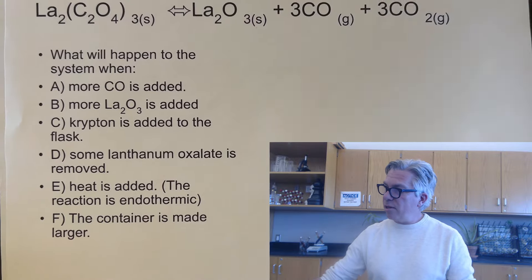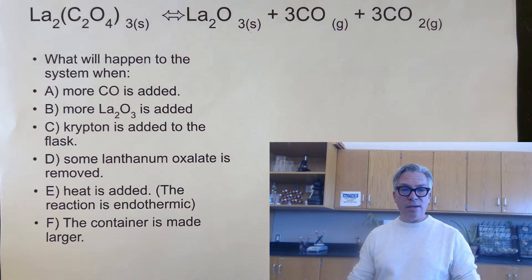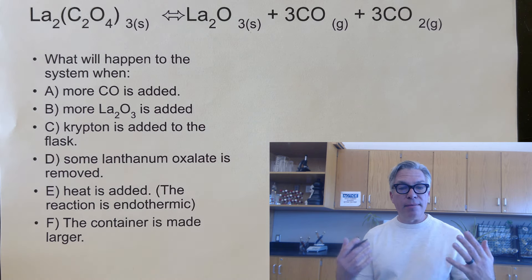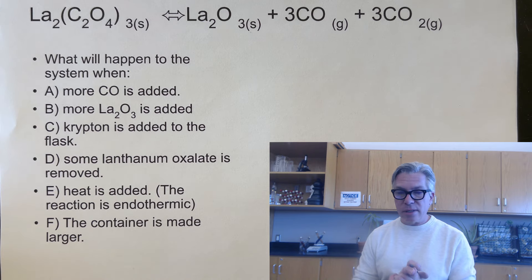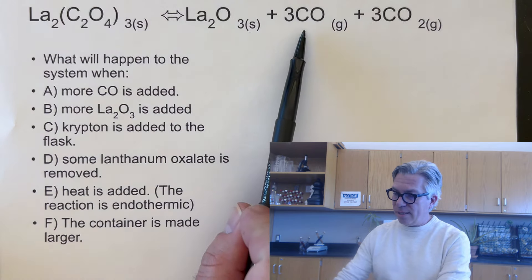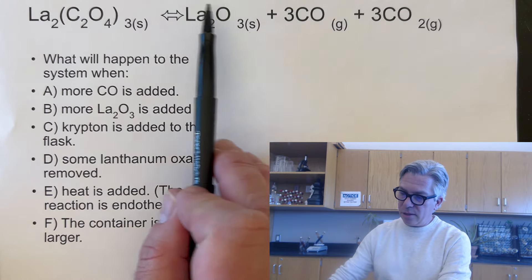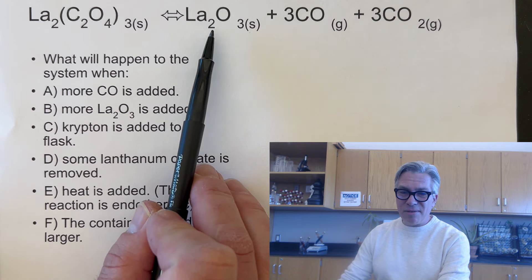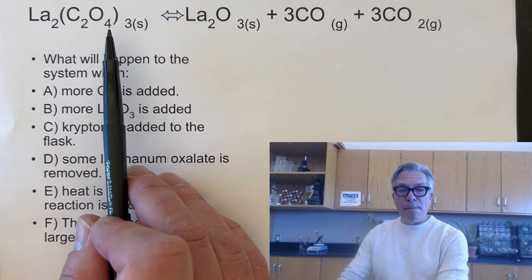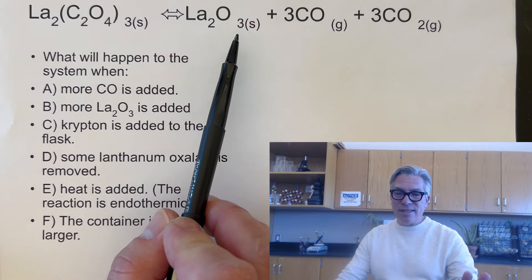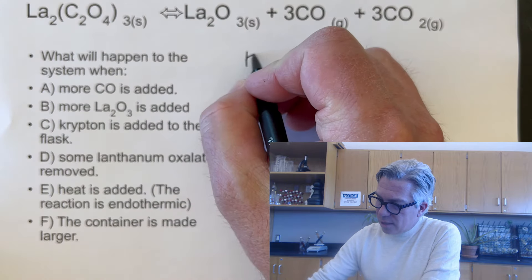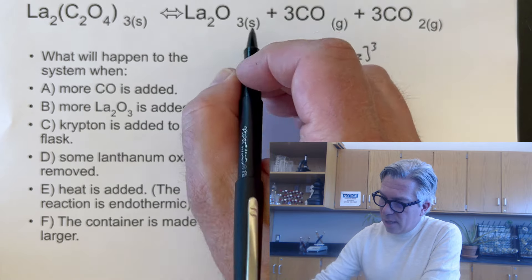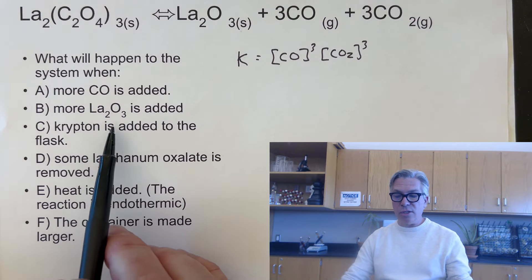Now a second set of sample questions. What happens when more carbon monoxide is added? That's a product, so the equilibrium shifts left. More lanthanum oxide is added — you might say it shifts left, but it's a solid in a heterogeneous equilibrium. In the K expression we only have CO³ and CO₂³; solids are not included. So actually there is no change to the system.